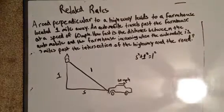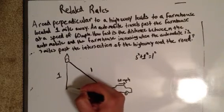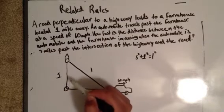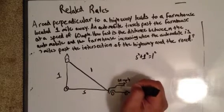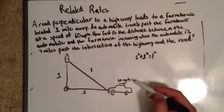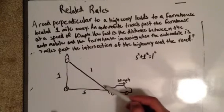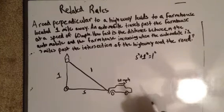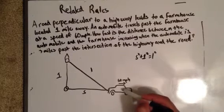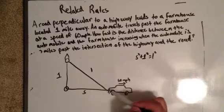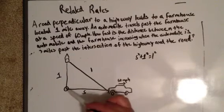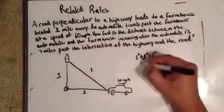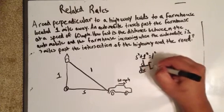Let's take a step back. We have a farmhouse one mile away from where the highway and the road to the farmhouse intersect. The distance between the farmhouse and the car forms a right triangle. The car is going 60 miles per hour, and we want to know how fast the distance is increasing when the car is 3 miles past the intersection. So let's take the derivative of s² + 1 = L².